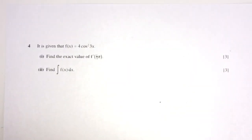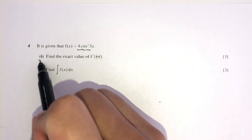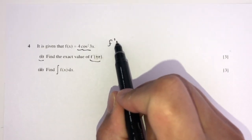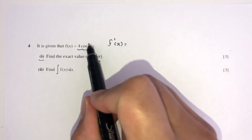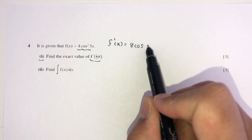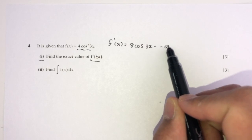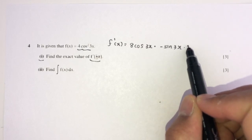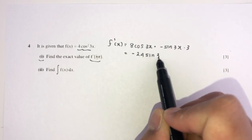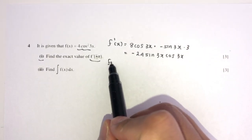Now let's move on to question number 4. We have f(x) = cos⁸(3x). For part 1, find the exact value of f′(1/9 π). Differentiating using the chain rule: f′(x) = 8cos⁷(3x) × (−sin(3x)) × 3 = −24 sin(3x) cos⁷(3x).